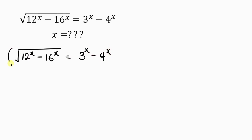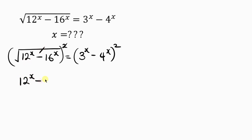We need to take the square of both sides to get rid of the square root. This square is going to cancel with the square root, leaving behind 12 to power x minus 16 to power x on the left hand side.